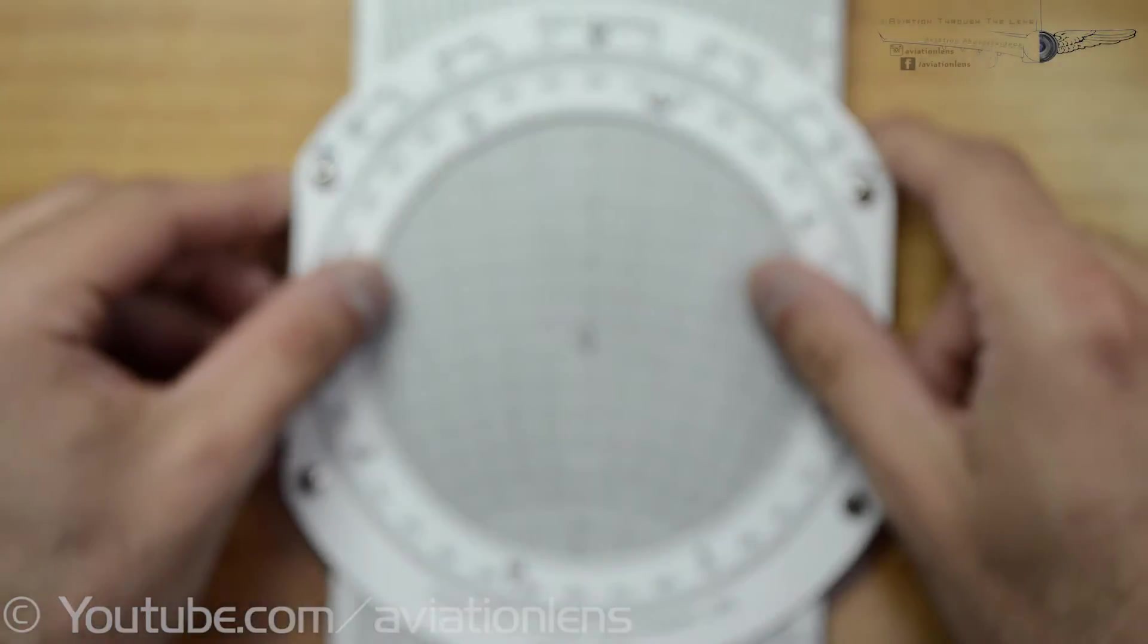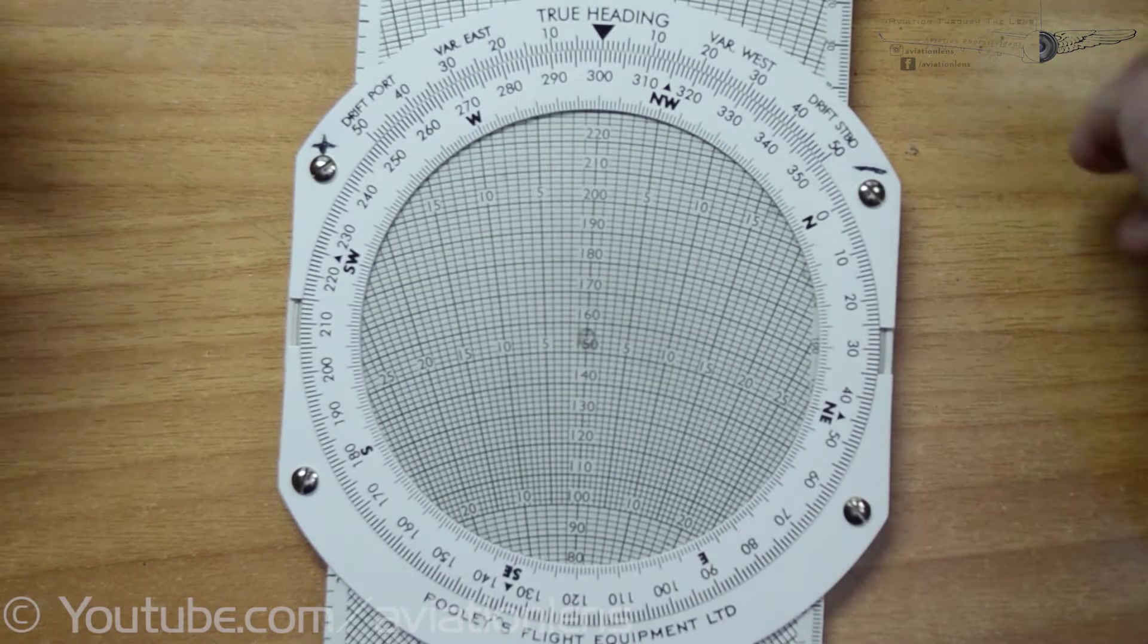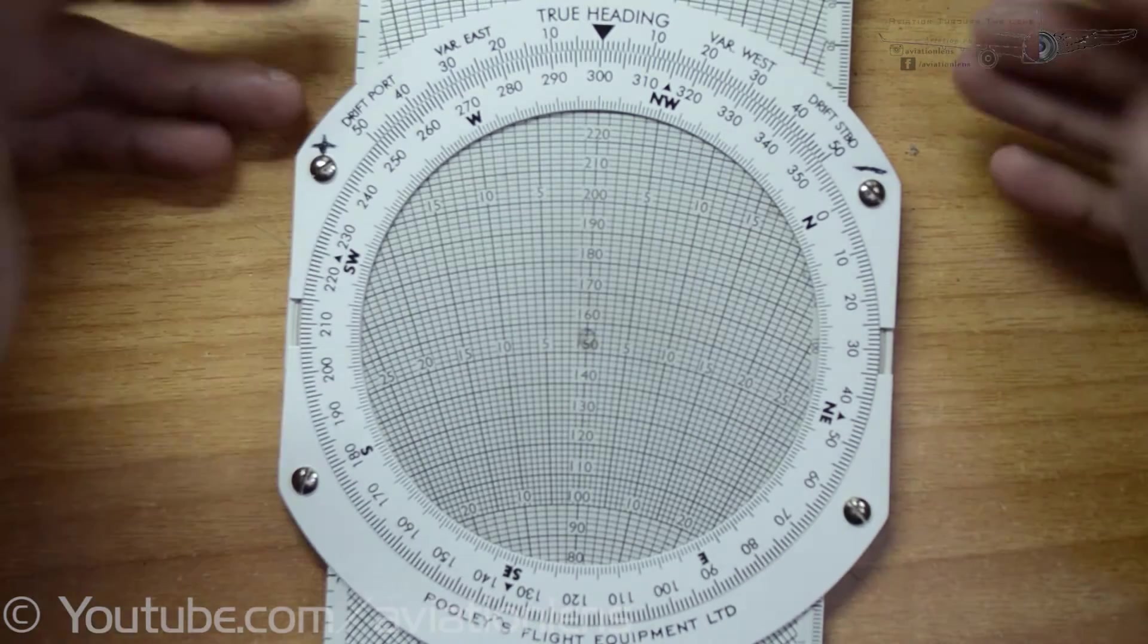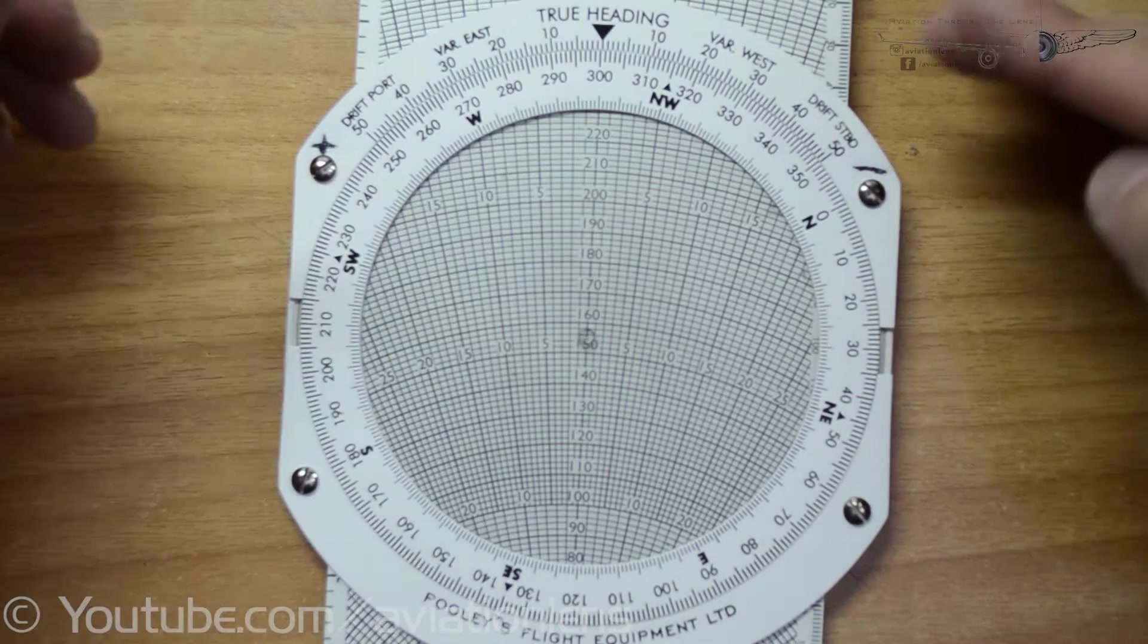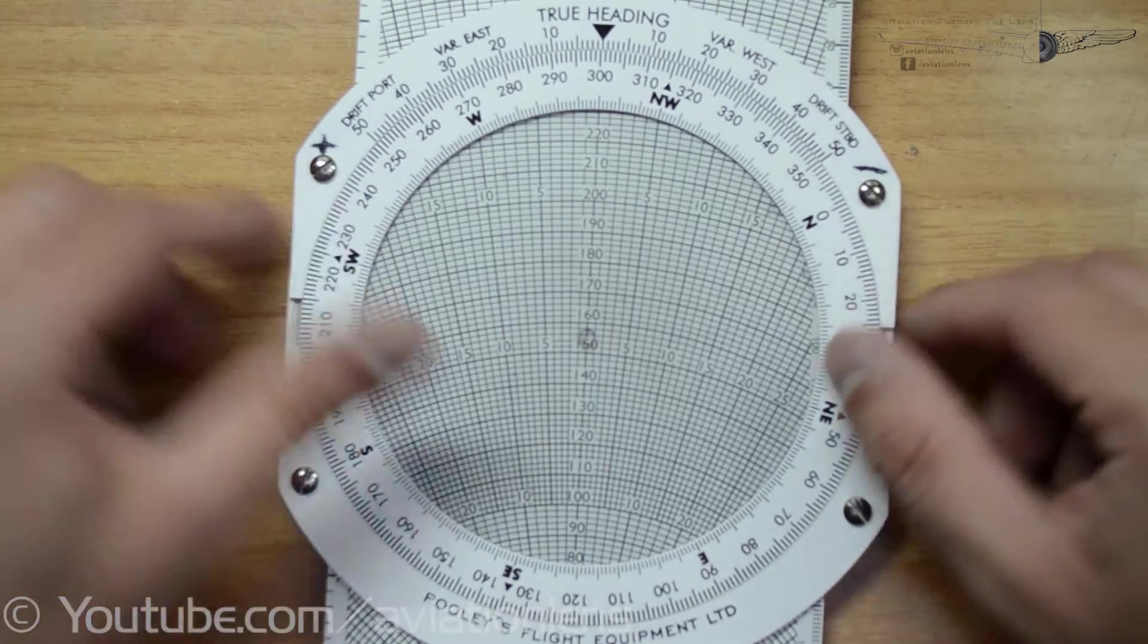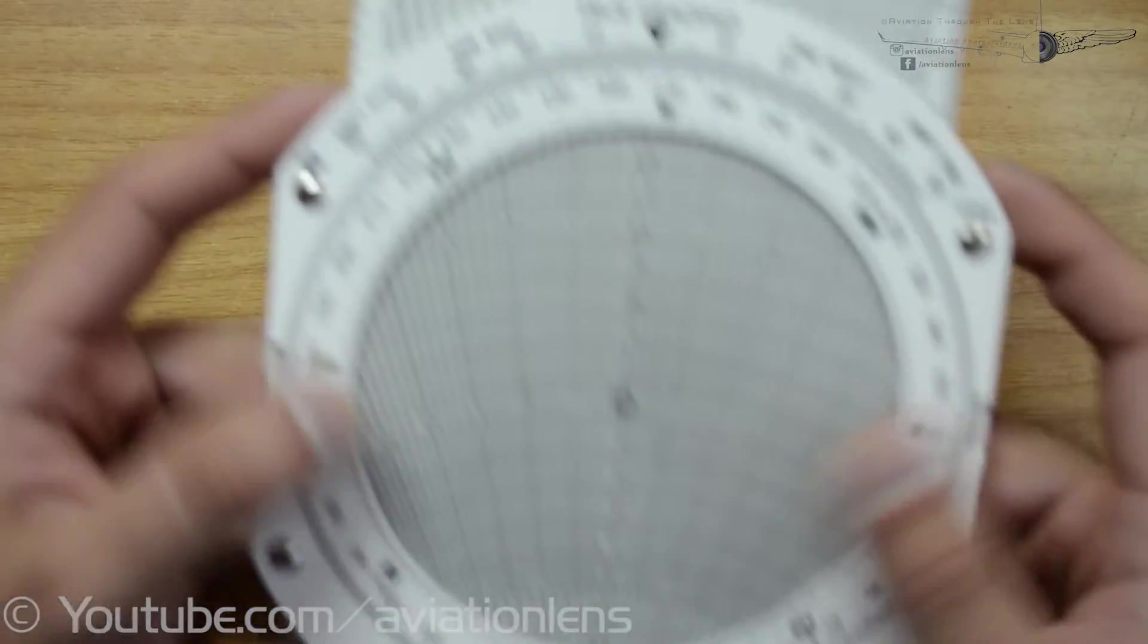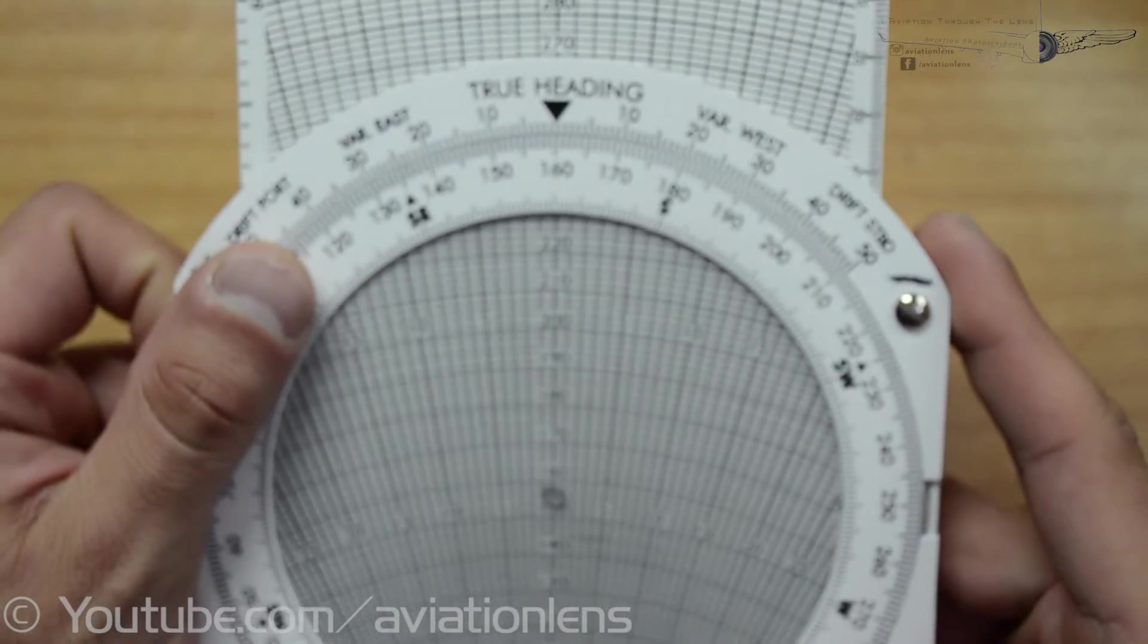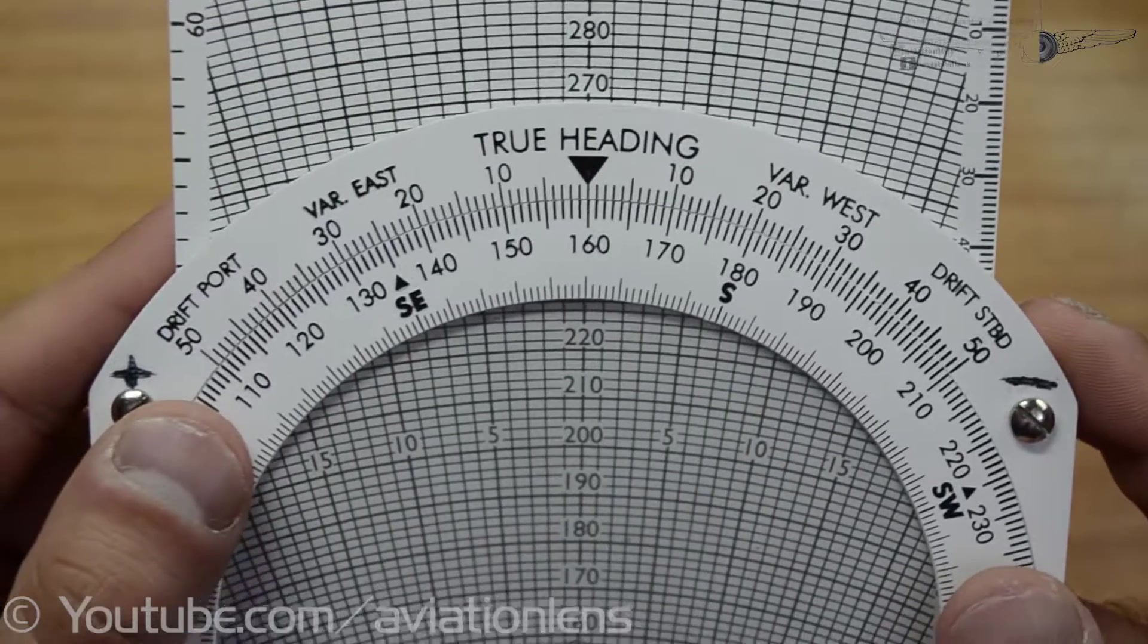The next step is to put the wind direction and velocity. So wind direction is 160 degrees. So 160 degrees on top. So we have 160 degrees on top.